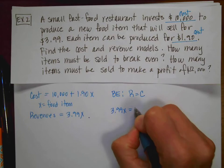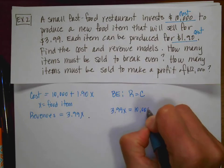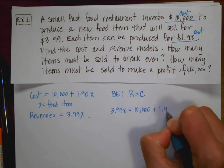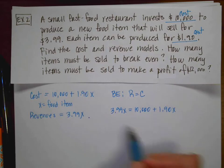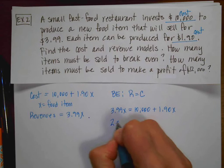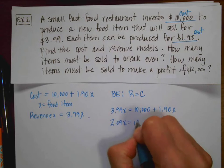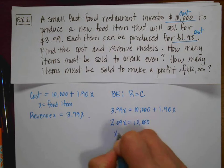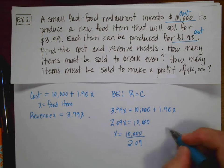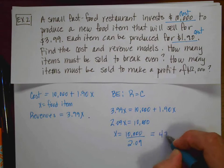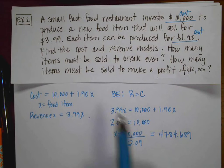So I'm going to say 3.99X is equal to the $10,000 plus the 1.90X. When I combine like terms, I get 2.09X is 10,000. X is 10,000 divided by 2.09. And when I do that math, I get 4784.689.